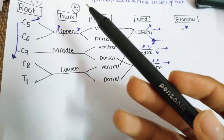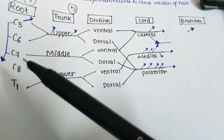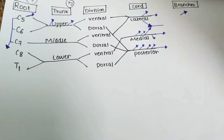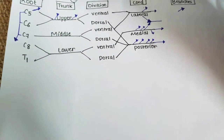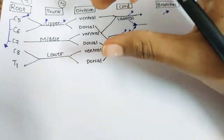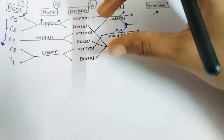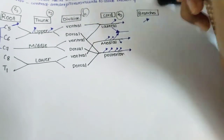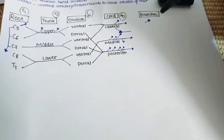To summarize: five roots form three trunks — C5, C6 form the upper trunk; C7 forms the middle trunk; C8, T1 form the lower trunk. Each trunk is then divided into ventral and dorsal divisions, giving a total of six divisions. These divisions then come together to form three cords. So: roots five, trunks three, divisions six, cords three.